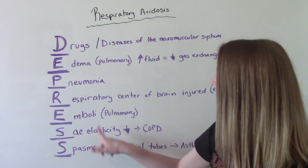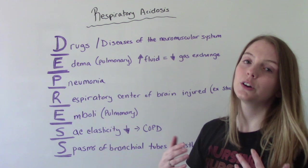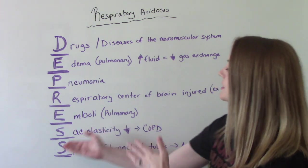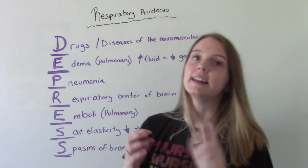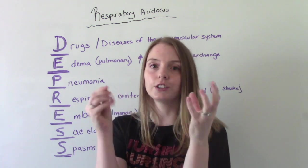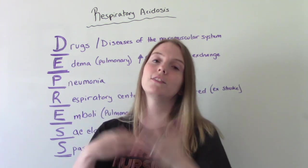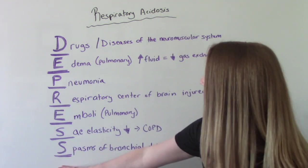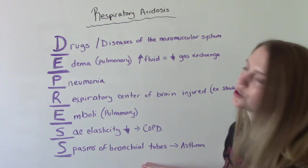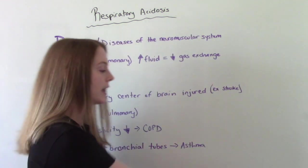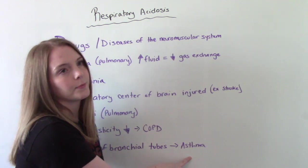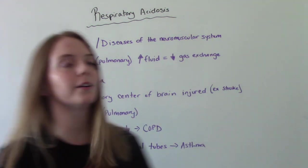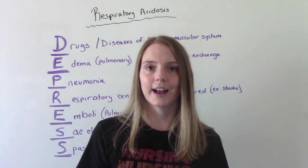The final letters: S is for sac elasticity decreased. Someone with COPD will have decreased elasticity in the alveoli, so they have a harder time flexing and opening, making gas exchange more difficult. The other S is for spasms of the bronchial tubes, which occurs in patients with asthma. This is a helpful memory tool to remember the causes of respiratory acidosis.